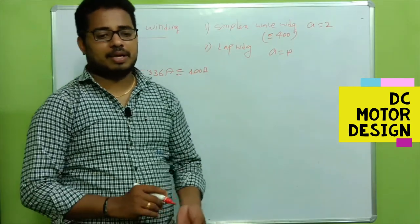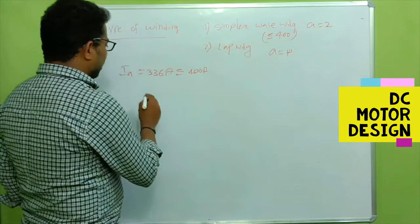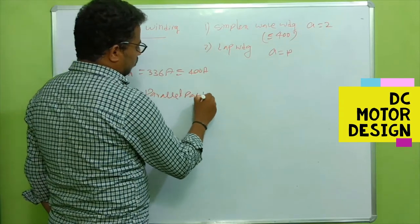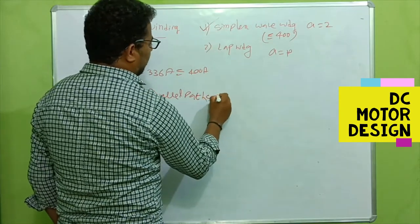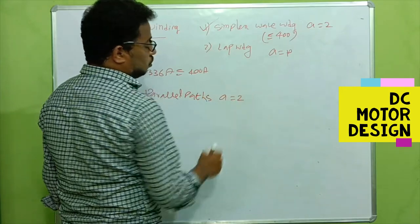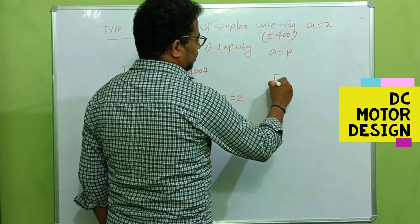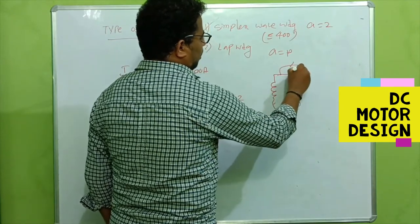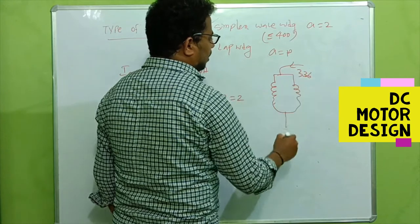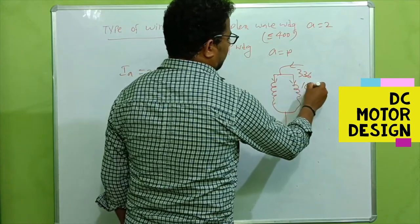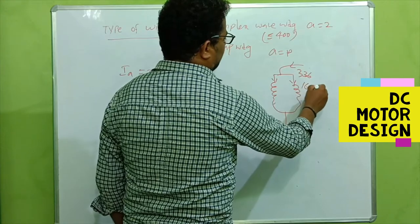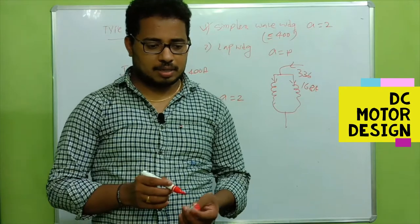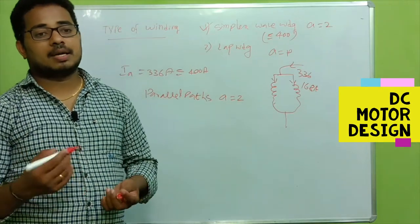The number of parallel paths for this job — since we chose simplex wave winding — is equal to 2. For example, this is the armature winding: if 336 amperes is coming in, then each parallel path will carry 336 divided by 2, which is 168 amperes.